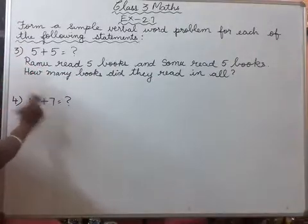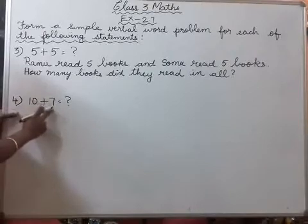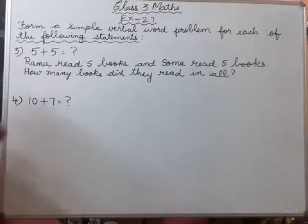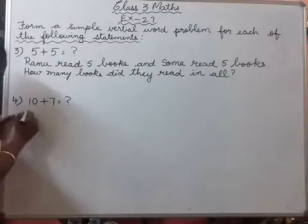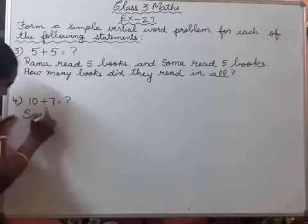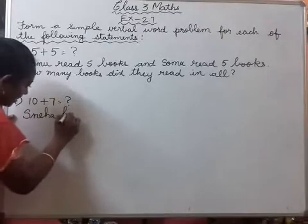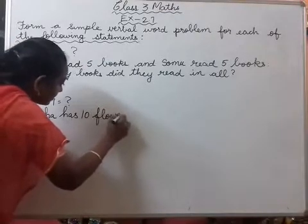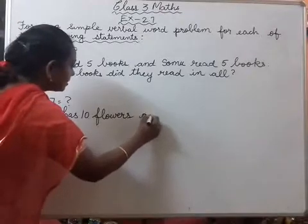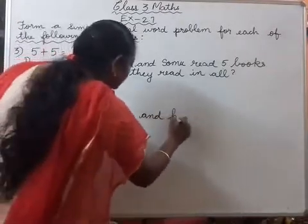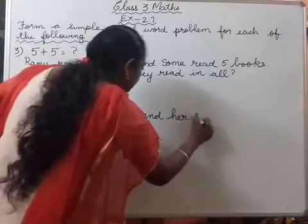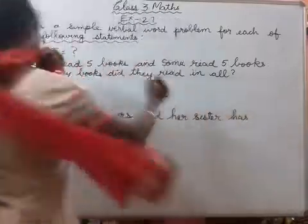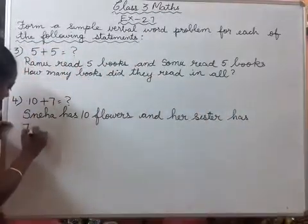next is 10 plus 7. Okay, 10 plus 7, you can frame your own questions also. Okay, so here I am taking Sneha's name. Sneha has 10 flowers and her sister has 7 flowers.